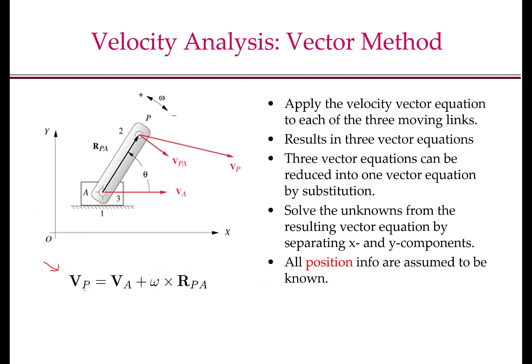This velocity equation for a point on a moving link is all we need for velocity analysis of a 4-bar mechanism. We apply the vector equation to each of the three moving links, resulting in three vector equations. These are then simplified by substitution into one vector equation, which reduces to two scalar equations from which we solve for the unknowns. We always assume all position information is known when doing velocity analysis.